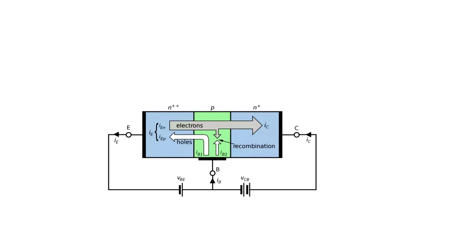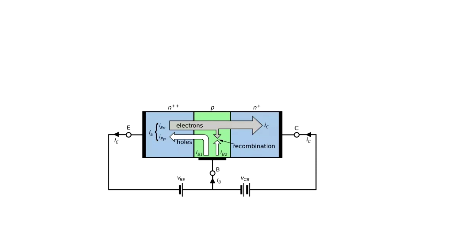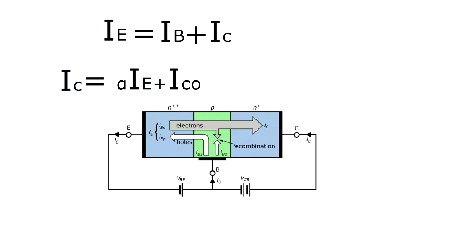We can also find a relation between IC, IE, and IB because we know the movement of electrons and thus the current flowing through each region. Applying Kirchhoff's Current Law, we find that IE is equal to IB plus IC. These two equations are very important and you need to know them.